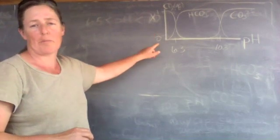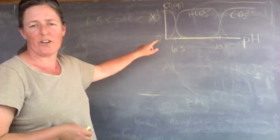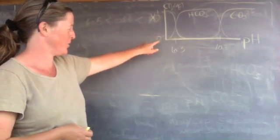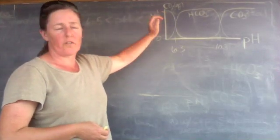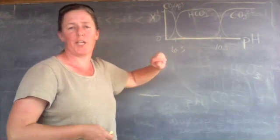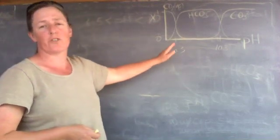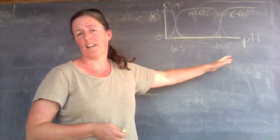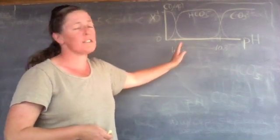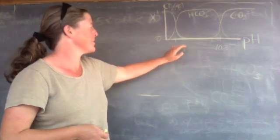I started by drawing a diagram up here that's in my last video on carbonate chemistry. It shows the proportion of various species of dissolved carbon compounds as a function of pH. Most natural waters are between pH 6 and 10, at least those that form carbonate minerals.